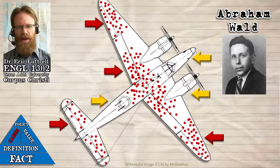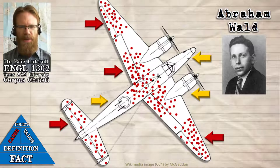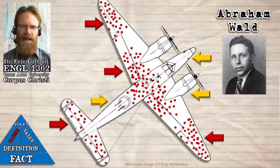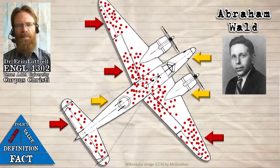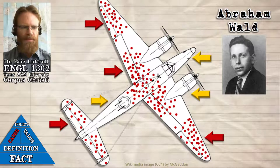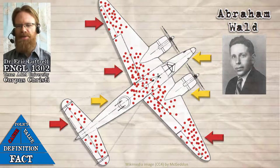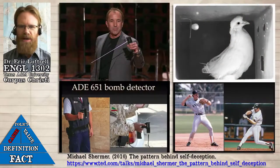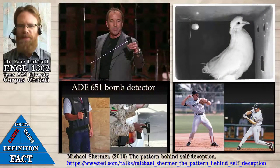A lot of the thinking process — both the deliberative system two metacognition, but also a lot of the system one automatic, non-reflective, intuitive cognition — is trying to figure out how things happen in the world so that we can make things happen that we want to happen. And this isn't just true for humans. As you may remember from Michael Shermer's TED Talk at the beginning of the semester, this is something pigeons do.